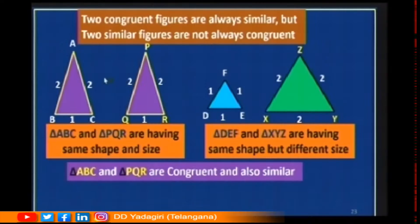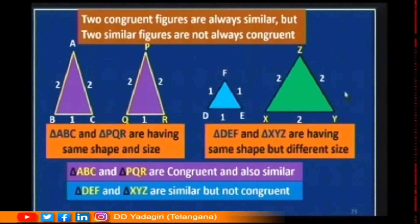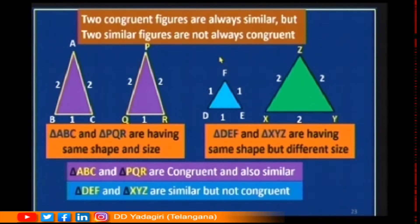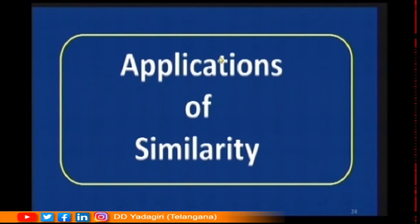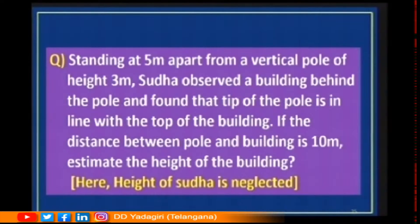Triangle ABC and triangle PQR are congruent, and at the same time they are also similar. Triangle DEF and triangle XYZ are similar but they are not congruent. Why are these not congruent? Because they do not have the same size. So two congruent figures are always similar, but two similar figures are not always congruent.